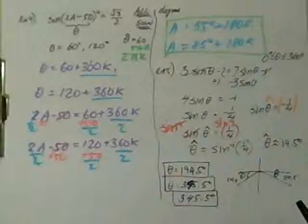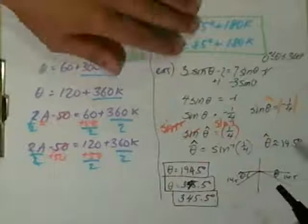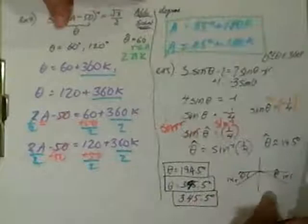194.5. There it is. 345.5. Check it with my work in the book. So there's example number 5.